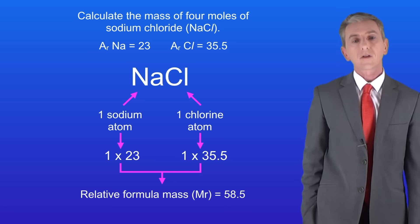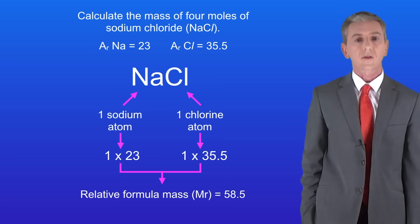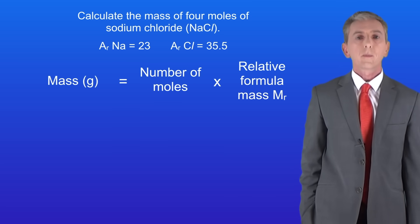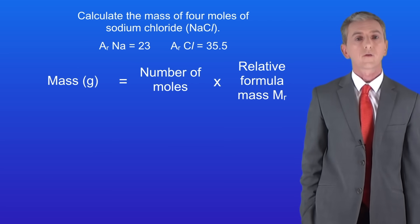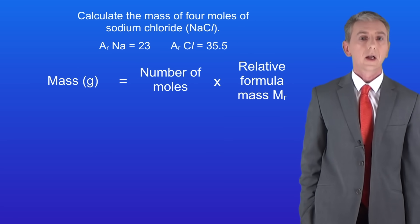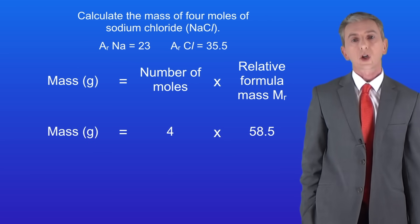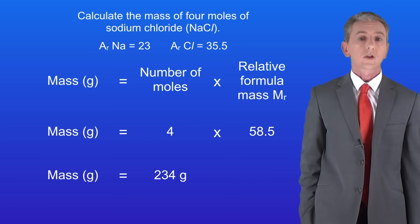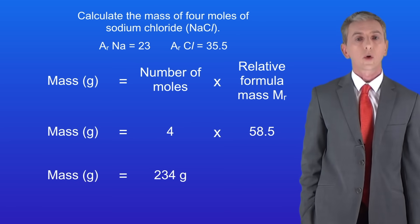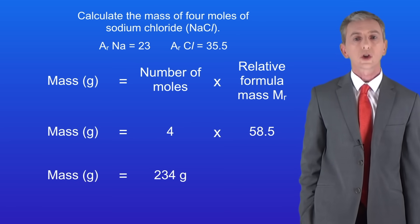Now we can go back to our equation and answer the question. The mass in grams is the number of moles multiplied by the relative formula mass, so we've got four moles multiplied by 58.5. This gives us a total mass of sodium chloride of 234 grams.